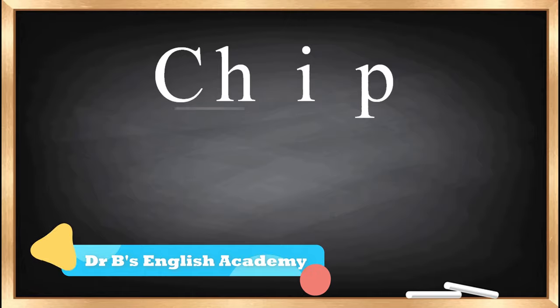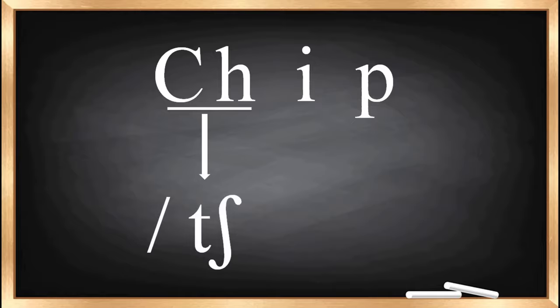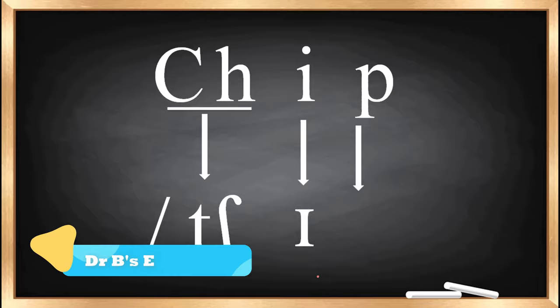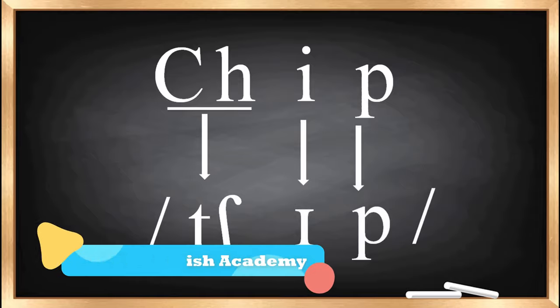The next word is 'chip'. Here CH produces only one sound: /tʃ/. Then I gives /ɪ/ and P gives /p/. So the transcription of 'chip' is /tʃɪp/.